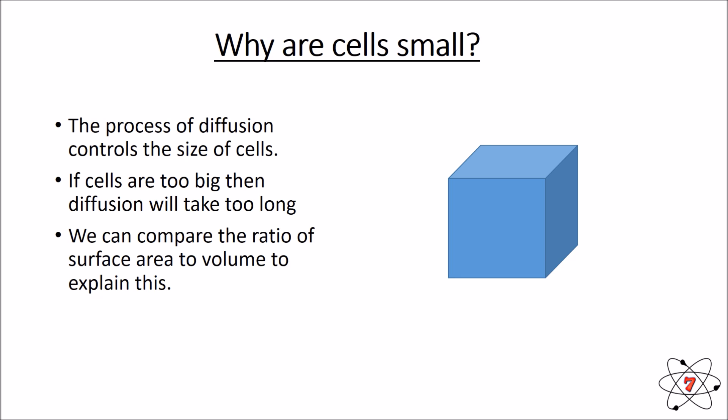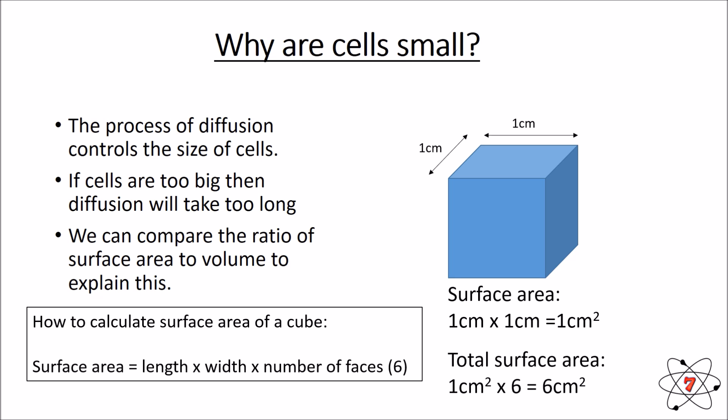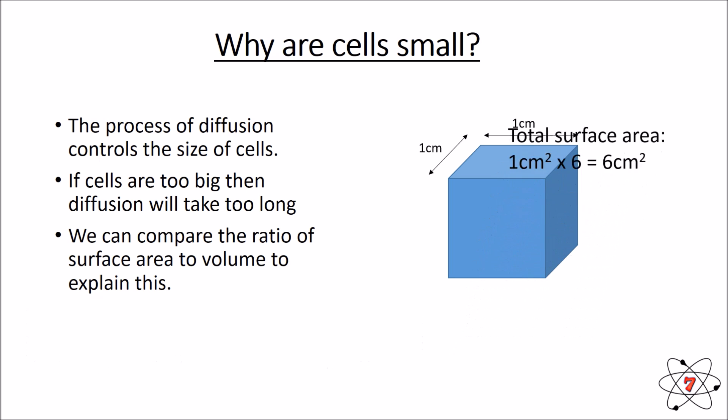To work out the surface area of a cube, we use a simple equation: multiply the length and width of any one face. Here the length and width are both one centimeter, so one times one equals one centimeter squared. Because it's a cube I have six faces, so I multiply one centimeter squared by six, giving a surface area of six centimeters squared. Including units is vital here.